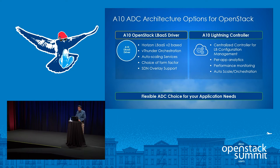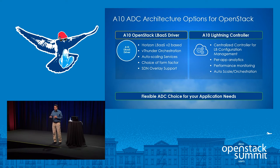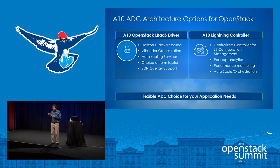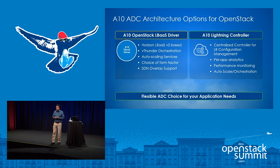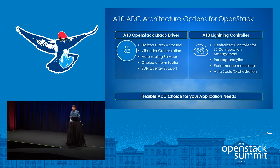The Aten Lightning controller provides the ability to spin up your ADCs next to where your apps are. It is a centralized controller with load balancing configuration through a single pane of glass. It provides per-app analytics — for every app you spin up an ADC or app delivery proxy, you get analytics for that one. It also provides performance monitoring and auto-scaling so you can scale up or scale down instances based on your load.